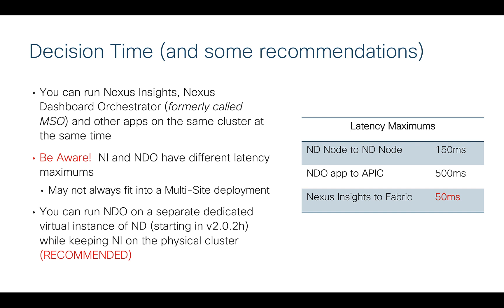If you're mixing Nexus Insights and NDO on the same cluster, you have to use the lowest common denominator, which would be 50 milliseconds. That might not work well with your multi-site deployment — you might have one site in Amsterdam and one in South Africa, which is going to be more than 50 milliseconds. So what's the alternative if you want both NI and NDO?